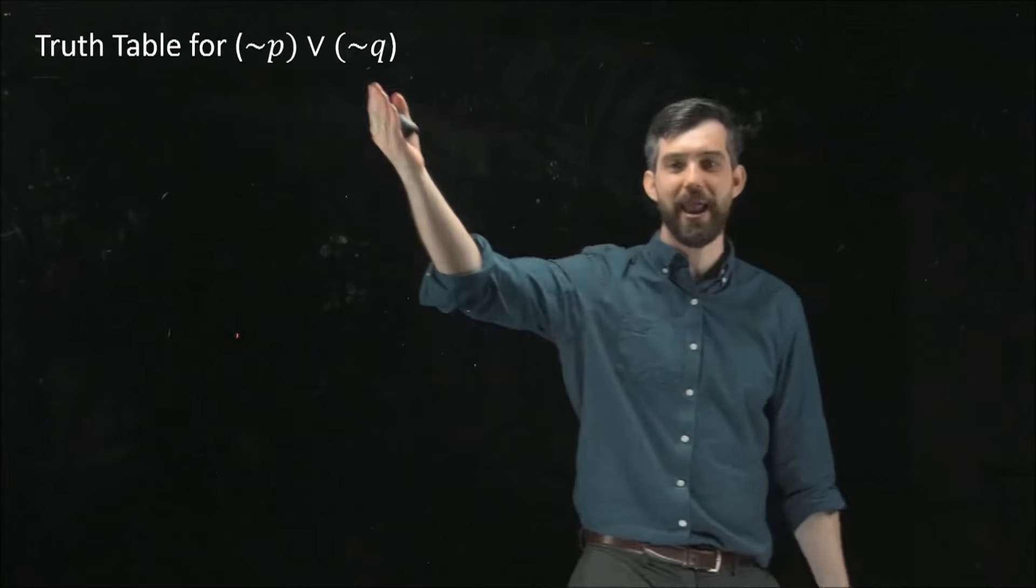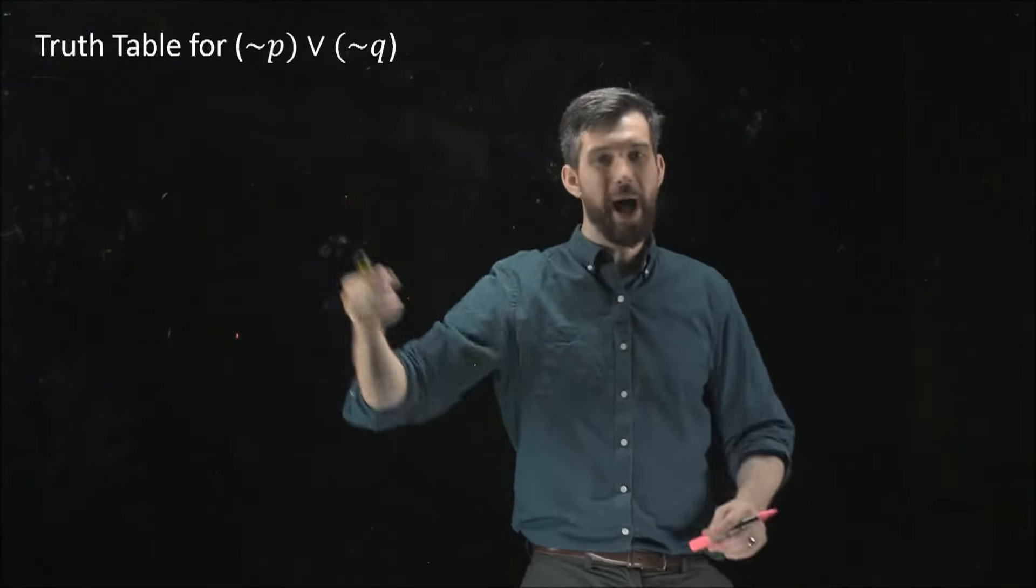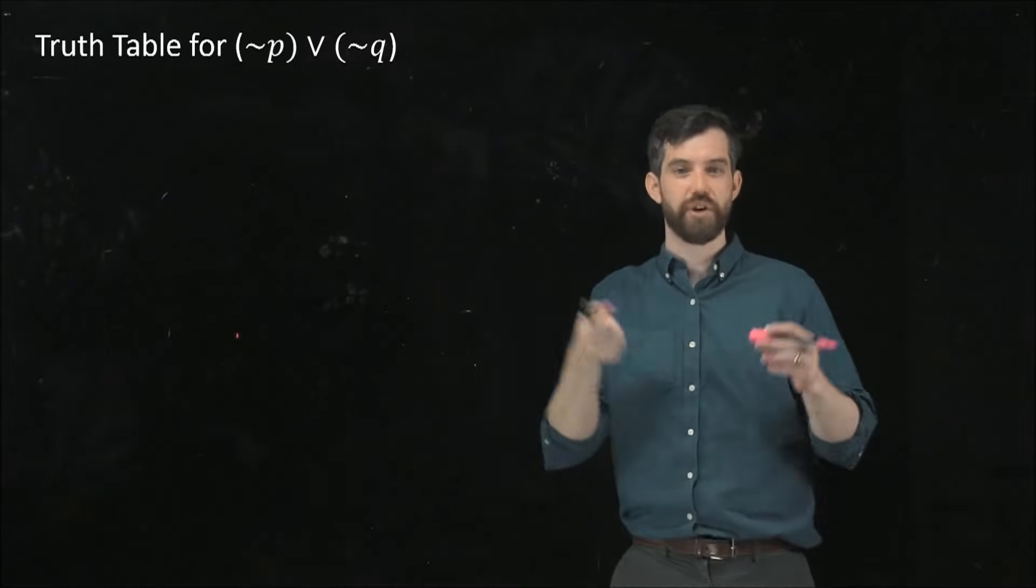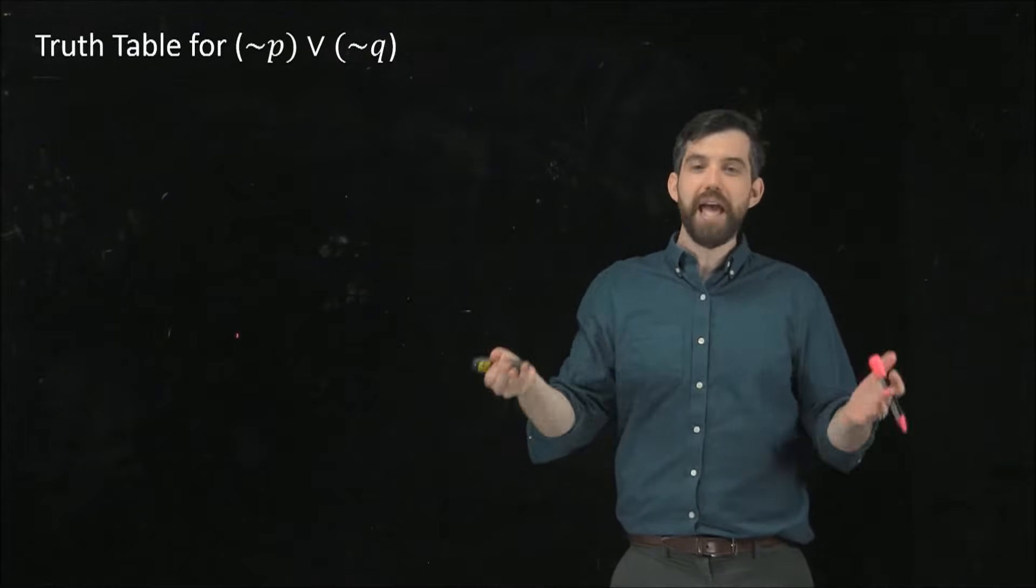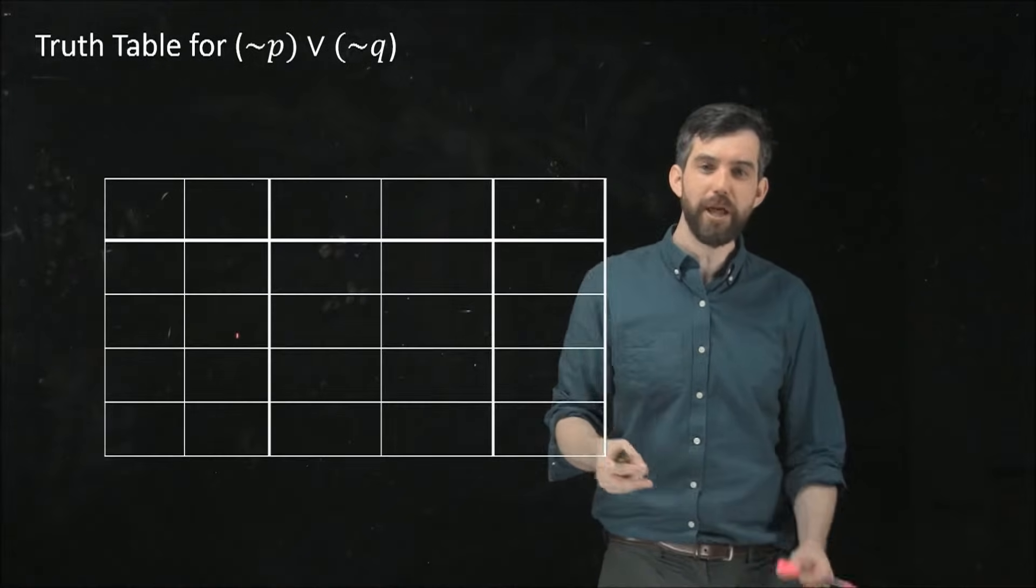It's already getting a bit complicated. I can keep adding—I can add an R, more variables—keep combining these negations, conjunctions, and ORs as much as I wish. So I want to have this systematic way of doing it, and we're going to use the truth table here. Let's pull up our template.